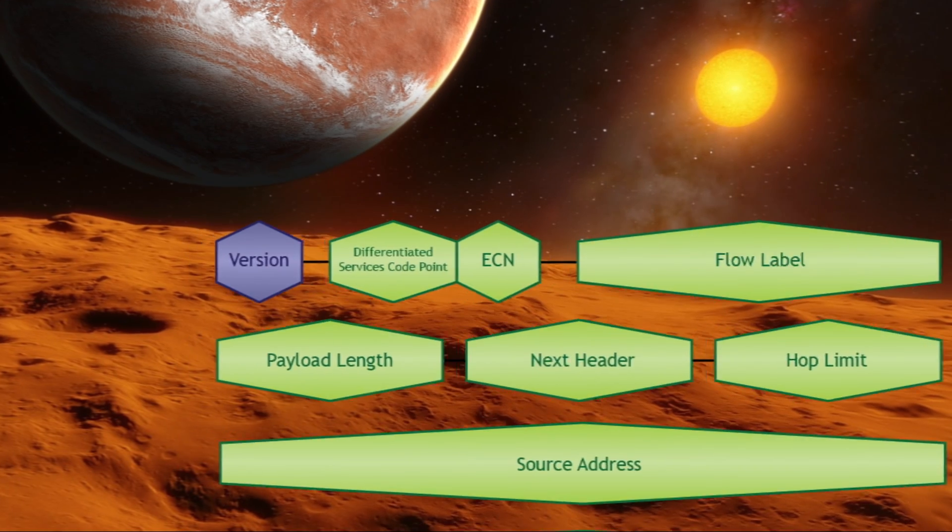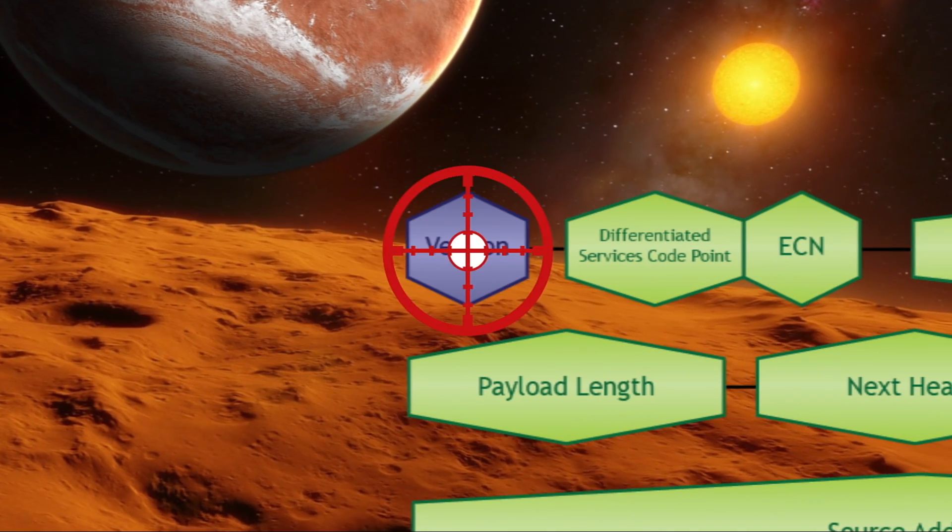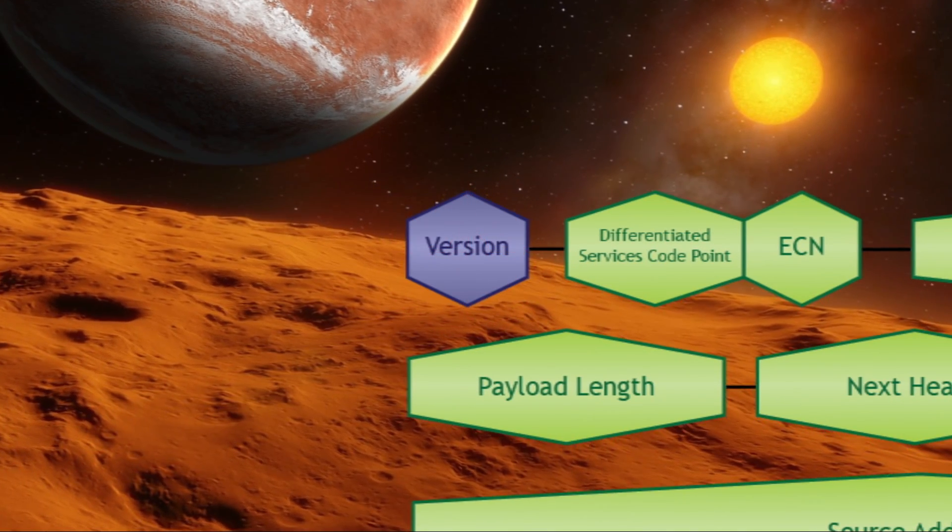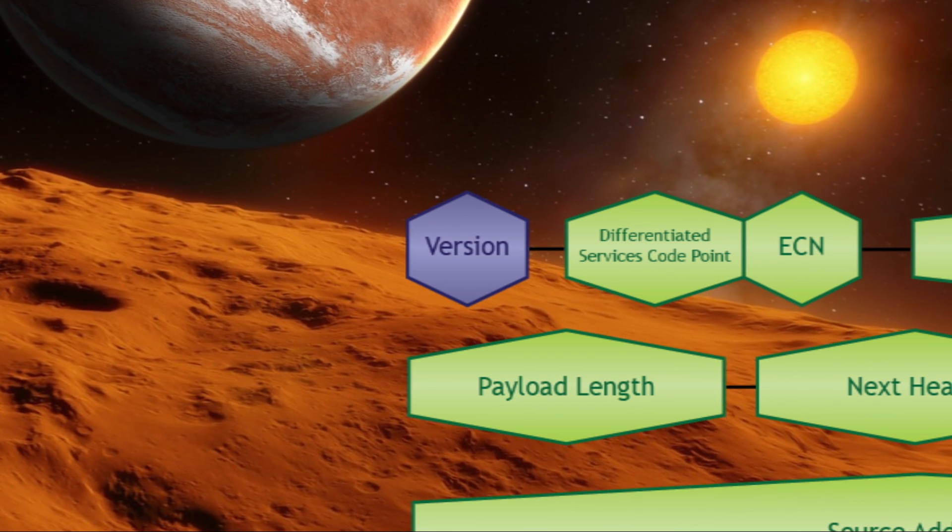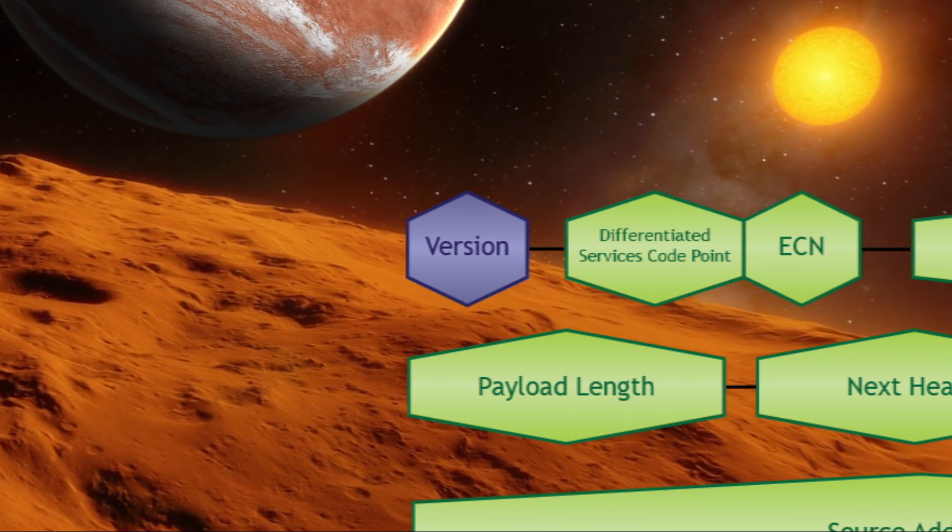Let's break it down some more. First up is the version field, which is the first 4 bits of the packet. This value indicates that this is an IPv6 packet. This number is always 6. Easy.